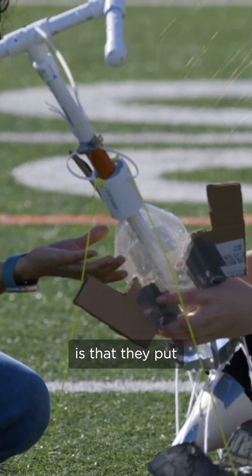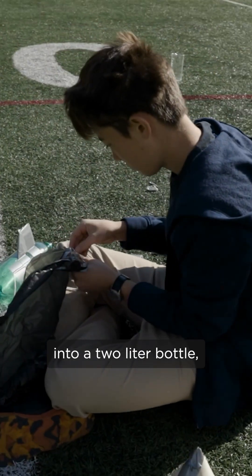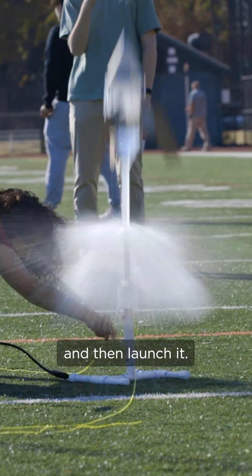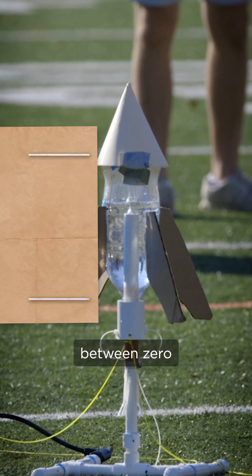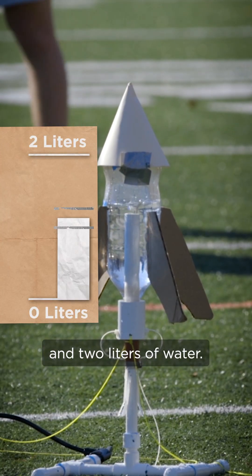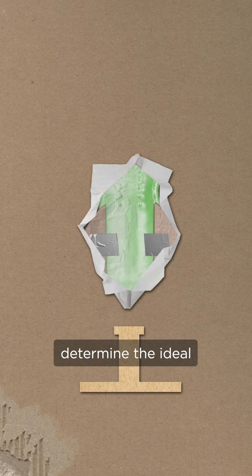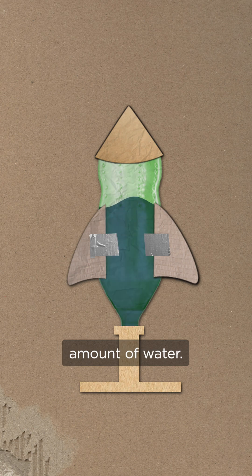The way the bottle rocket works is that they put a certain amount of water into a two-liter bottle. We use a bike pump to pressurize it and then launch it. There's a sweet spot between zero liters of water and two liters of water. They have to work with an online simulator that helps them determine the ideal and most efficient amount of water.